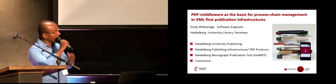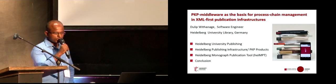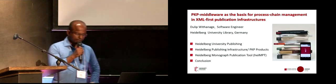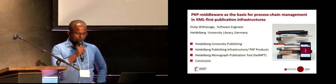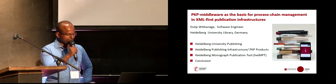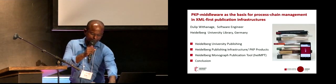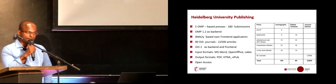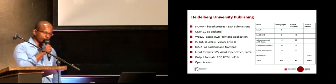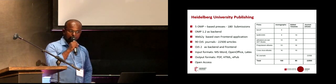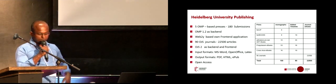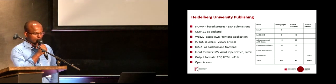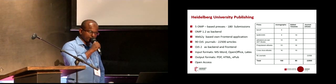First I'm going to show you some screenshots of our publishing infrastructure and our XML generation process. Here on the right side you see an image of the books we have already published. We have five OMP-based presses, 180 submissions — from that, 100 monographs and 80 edited volumes. We are using OMP 1.2 as our back-end, and for the front-end we have developed our own Web2Pi-based front-end application.